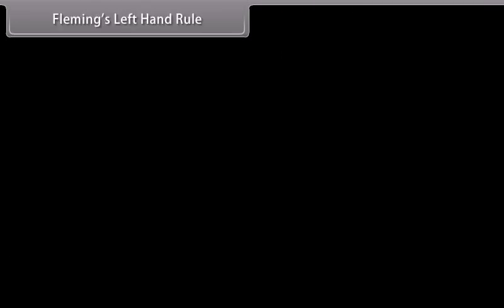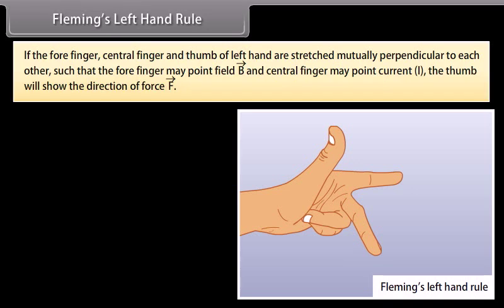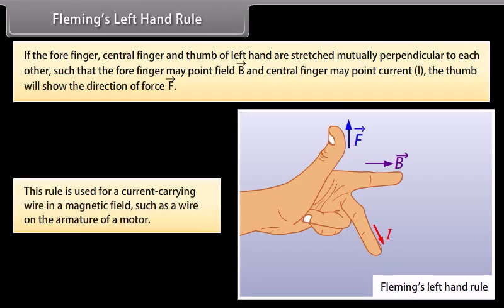Fleming's Left Hand Rule: If the forefinger, central finger, and thumb of the left hand are stretched mutually perpendicular to each other such that the forefinger points in the direction of the field and the central finger points in the direction of current, then the thumb will show the direction of force. This rule is used for a current-carrying wire in a magnetic field, such as a wire on the armature of a motor.